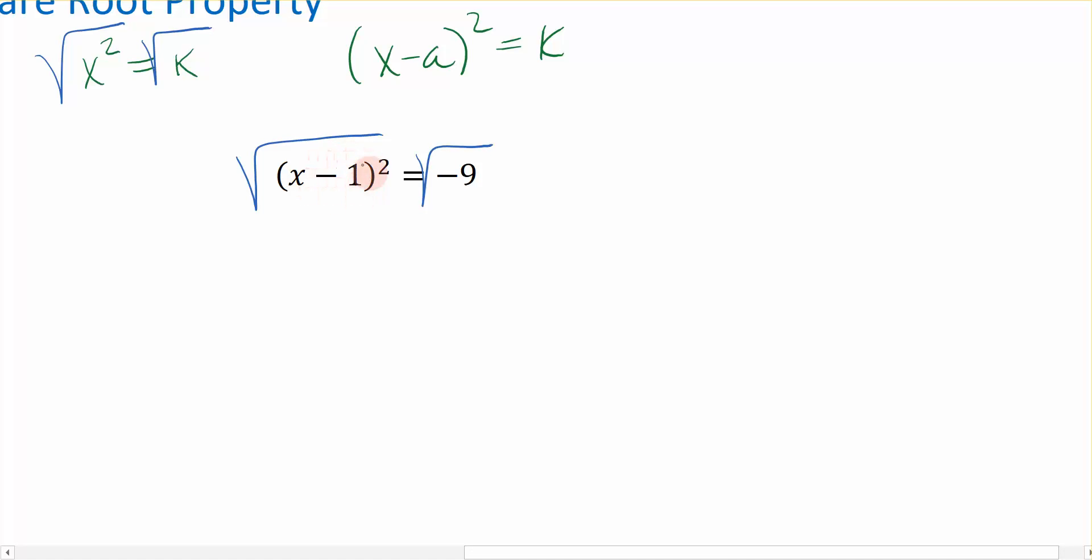When I take the square root of the left-hand side, I get x - 1. And when I take the square root of the right-hand side, the square root of a negative number is i, and the square root of 9 is plus or minus 3. So I get ±3i for that.